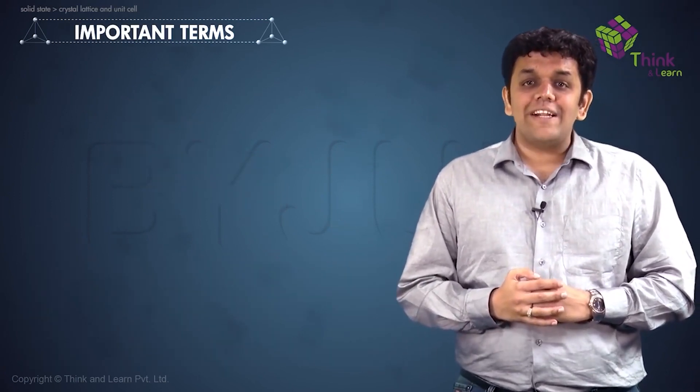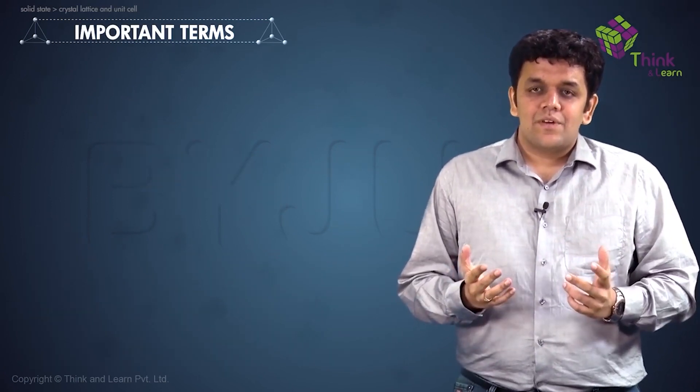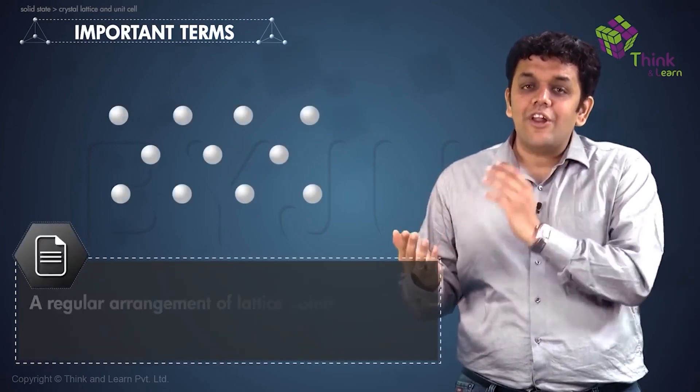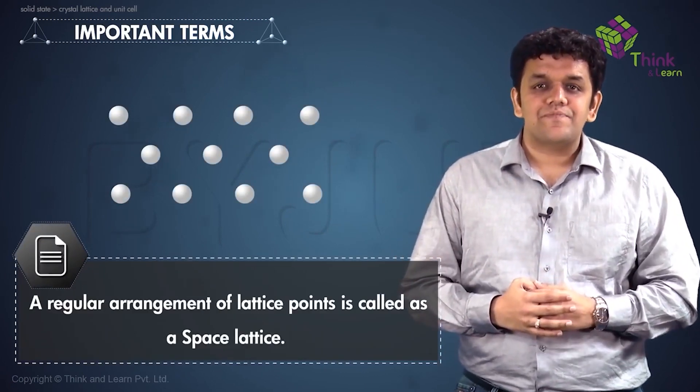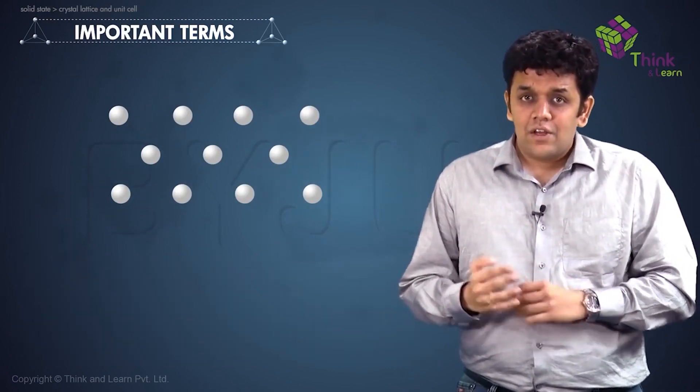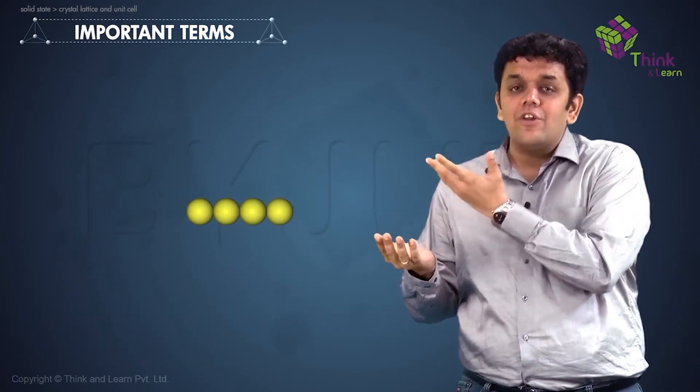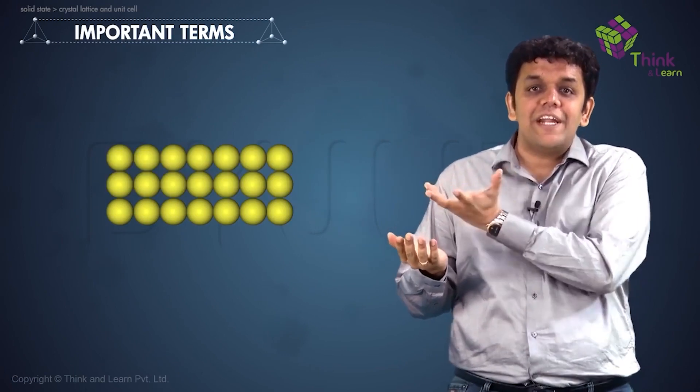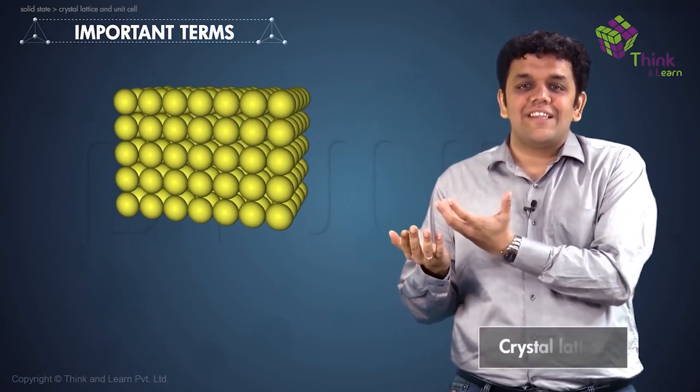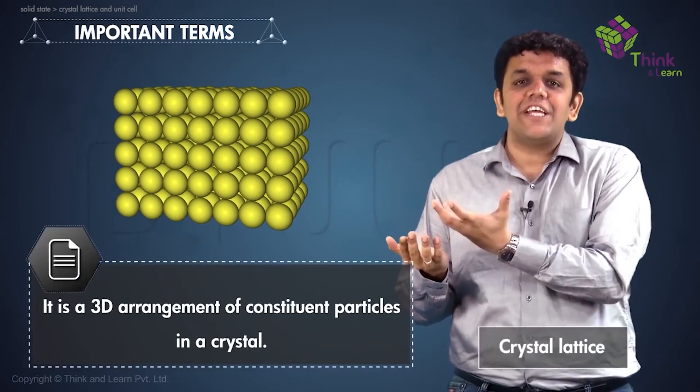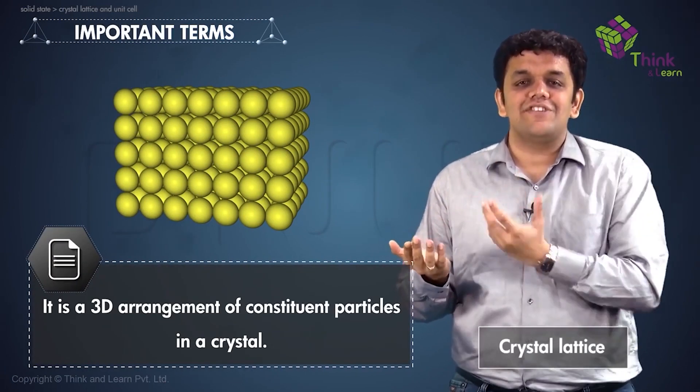Next, we have space lattice. A regular arrangement of lattice points would be called as a space lattice. Lastly, do you notice that this particular crystalline solid can be looked at in a 3D kind of a way as well? Well, that exactly is the crystal lattice. The crystal lattice is the 3D arrangement of constituent particles in a crystal.